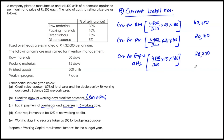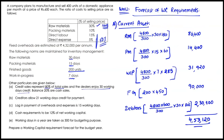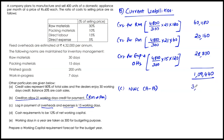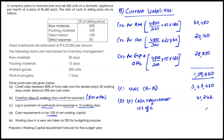Total current liabilities: 60,480 + 20,160 + 28,800 = Rs. 1,09,440. Net working capital (C) = Current assets minus Current liabilities = 4,53,120 − 1,09,440 = Rs. 3,43,680. Cash requirement (D) = 12% of net working capital = 3,43,680 × 12% = Rs. 41,242. Total working capital required = 3,43,680 + 41,242 = Rs. 3,84,922.